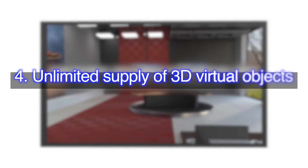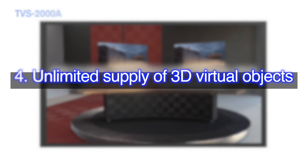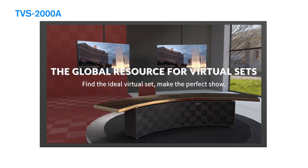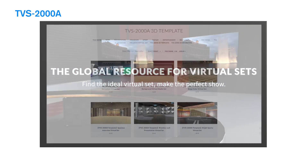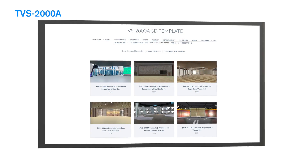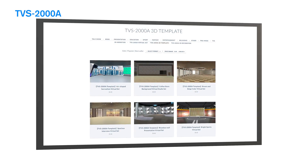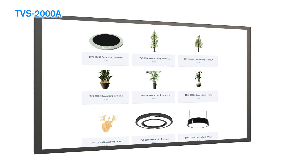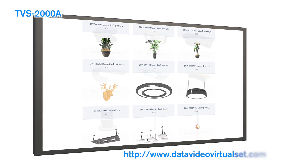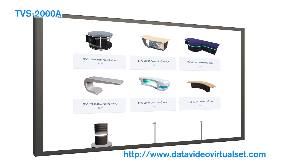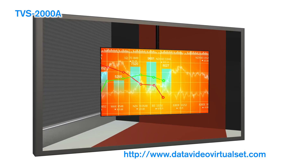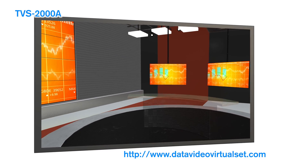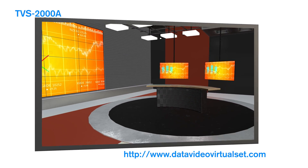Number 4: Unlimited supply of 3D virtual objects. With the TVS 2000A, you can make every set special and create a unique identity for your channel. Visit datavideo virtualset.com to download new 3D objects — from bonsai trees to tables — all available for free.